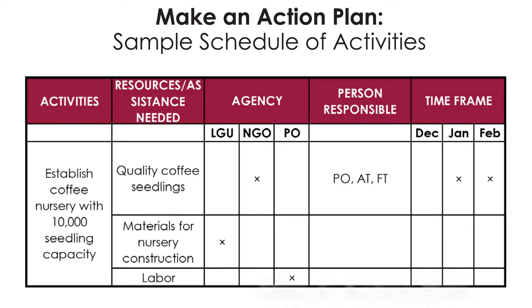Step 6: Action plan. An action plan gives all members of the family a chance to play a role in creating a strategy to overcome threats during the farm planning stage.